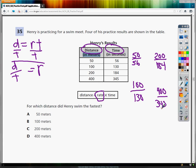50 divided by 56 gives me 0.89. I'm going to change colors real fast.